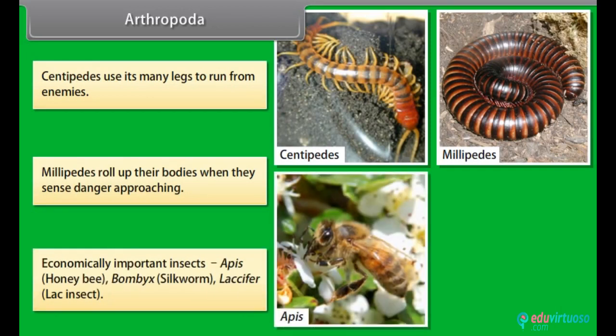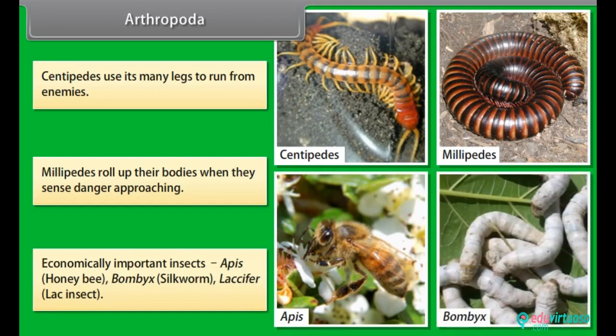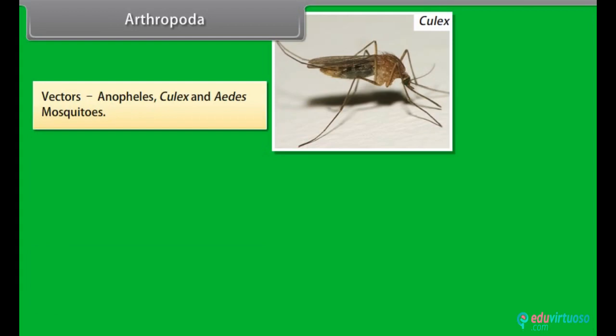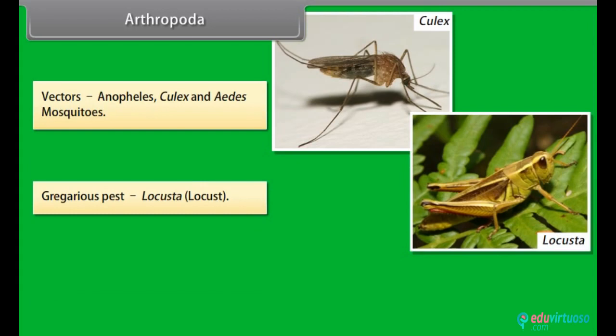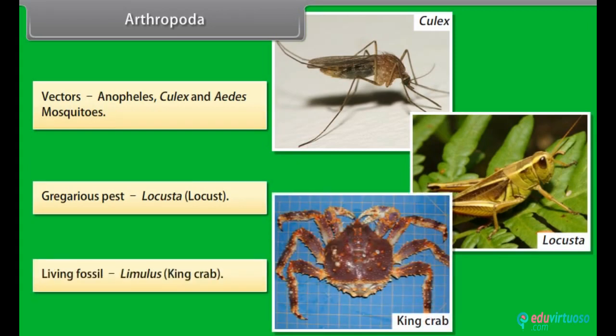Economically important insects include: Apis, i.e. honeybee; Bombyx, i.e. silkworm; and Lacifer, i.e. lac insect. Vectors: Anopheles, Culex and Aedes mosquitoes. Gregarious pest: Locusta, i.e. locust. Living fossil: Limulus, i.e. king crab.